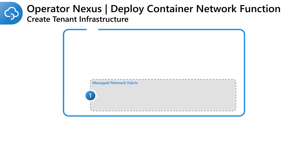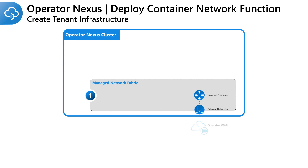First, we will use the managed network fabric service to create a layer 3 isolation domain. We will create an external network for the layer 3 isolation domain that will enable the SMF to communicate with the operator wide area network. We will then add an internal network to the layer 3 isolation domain that enables the SMF to communicate with other 5G network functions in the Operator Nexus cluster using standard BGP protocol.